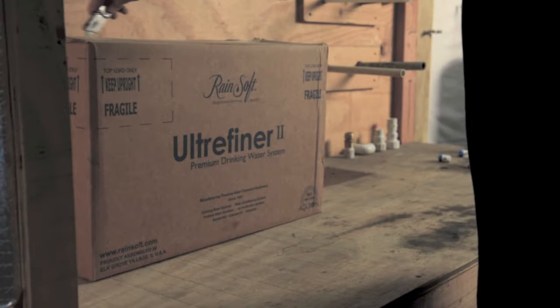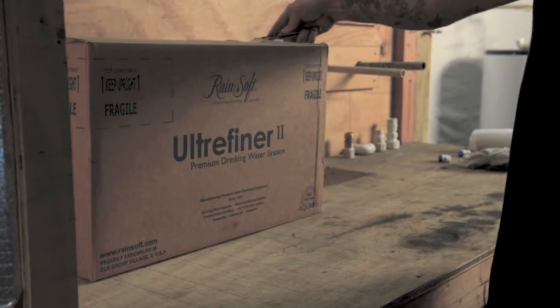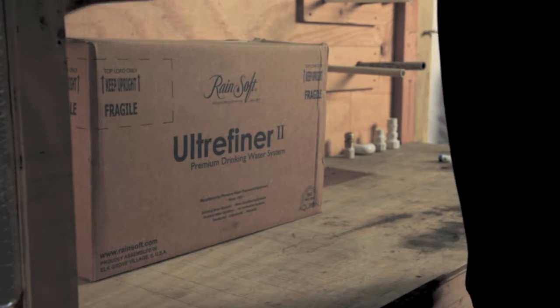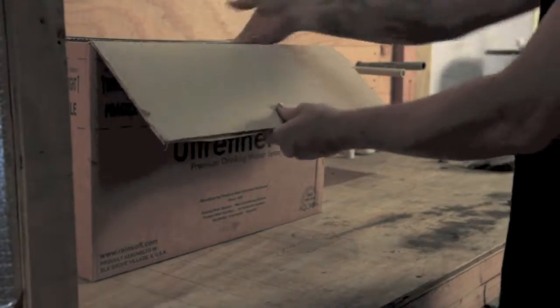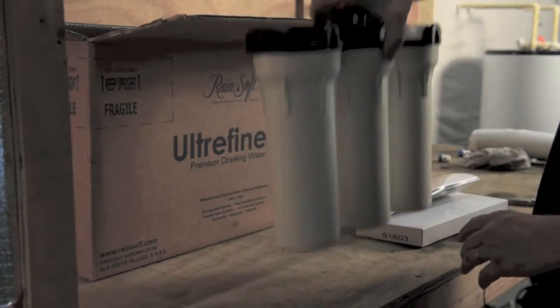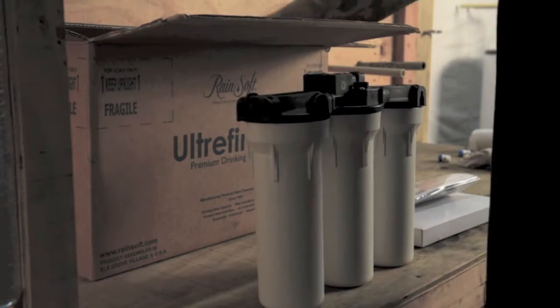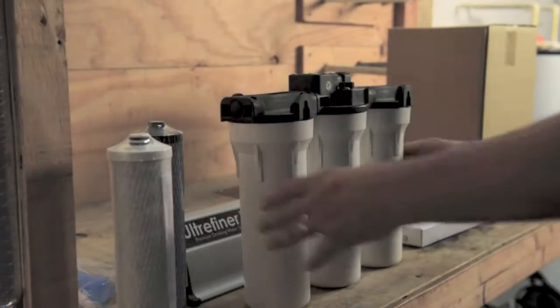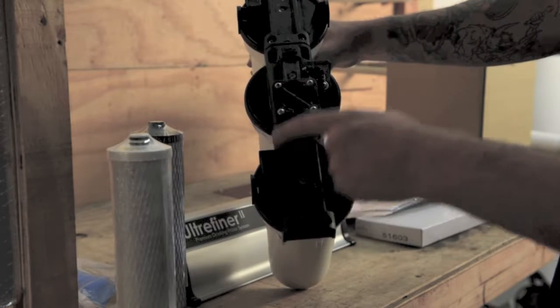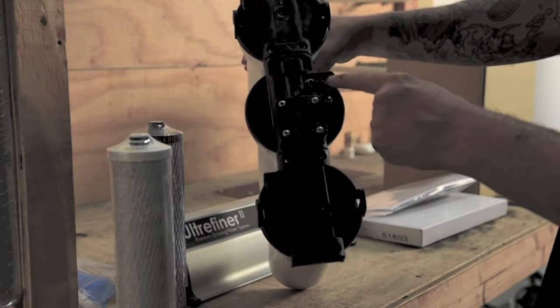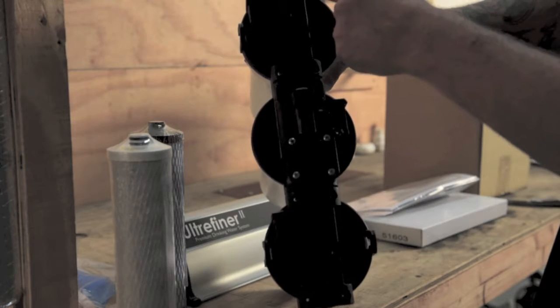When opening the box, cut from the top and set all items aside. The primary component of a reverse osmosis is the three-stage filtration. You first have the inlet connection, the pressure tank connection, your drain, and the outlet.